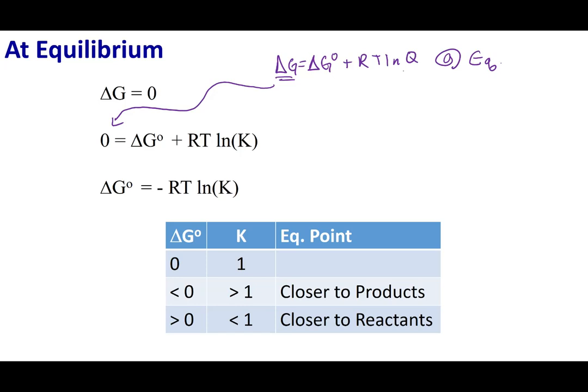If I'm also at equilibrium, I know Q is going to equal K. So what I can do is I can write this expression and know that this expression is true at equilibrium. I can go ahead and rearrange it and show you how delta G naught is related to K, our equilibrium constant.